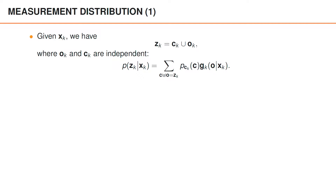Note that you can think of every term in this summation as an association hypothesis, where you look at all the measurements in zk and say: I think these measurements are object measurements, whereas all the other measurements are clutter. You then make sure to go through all the possible ways of splitting the measurements into object and clutter measurements. We already have a model for the object measurements, but we also need a model for the clutter in order to complete our model.